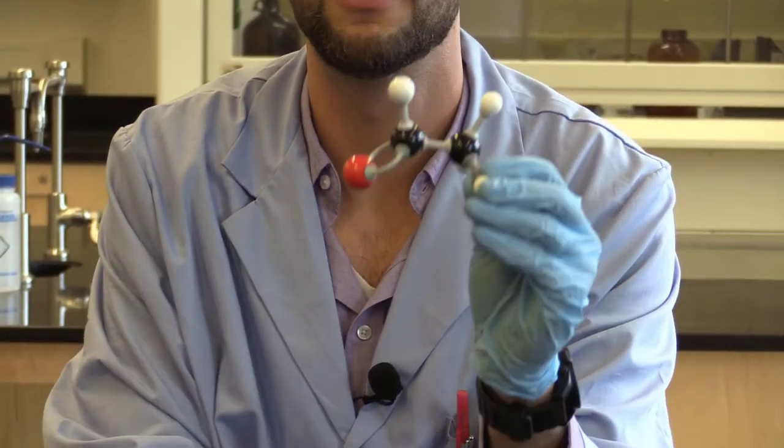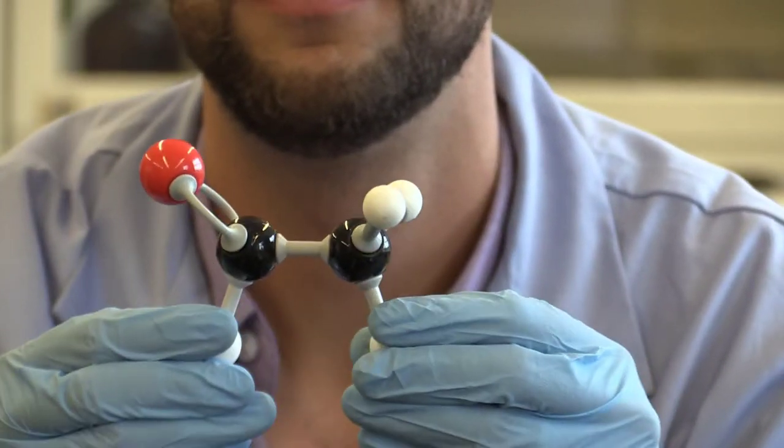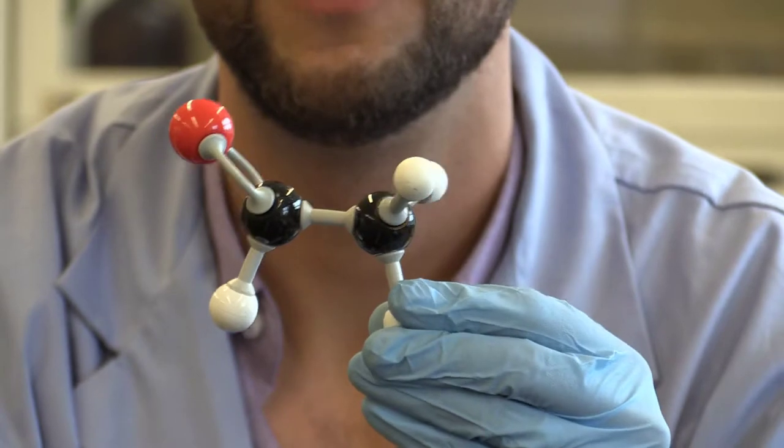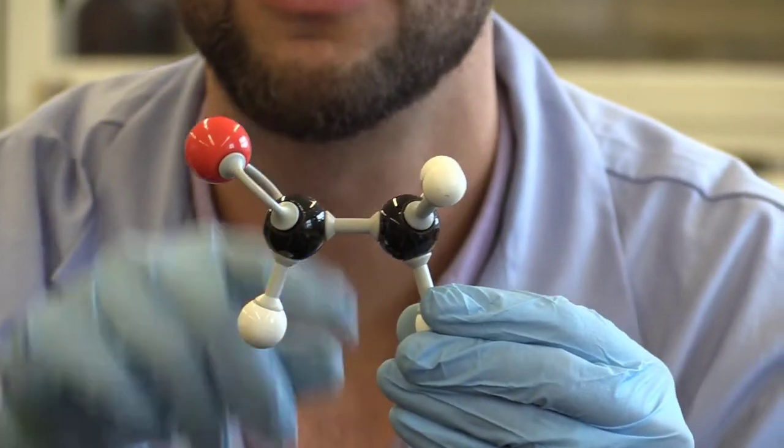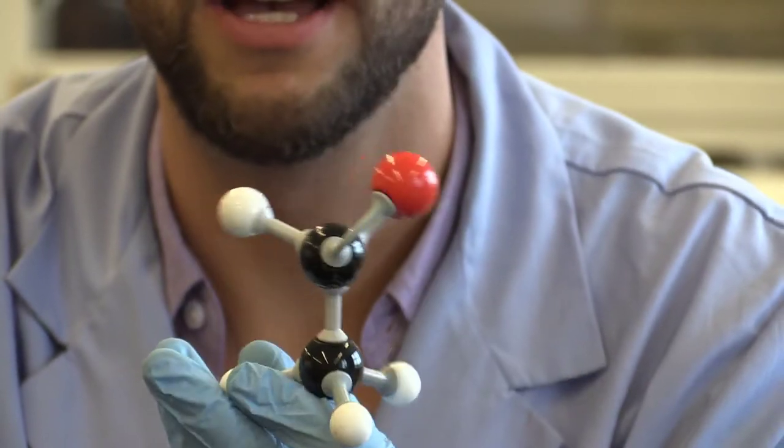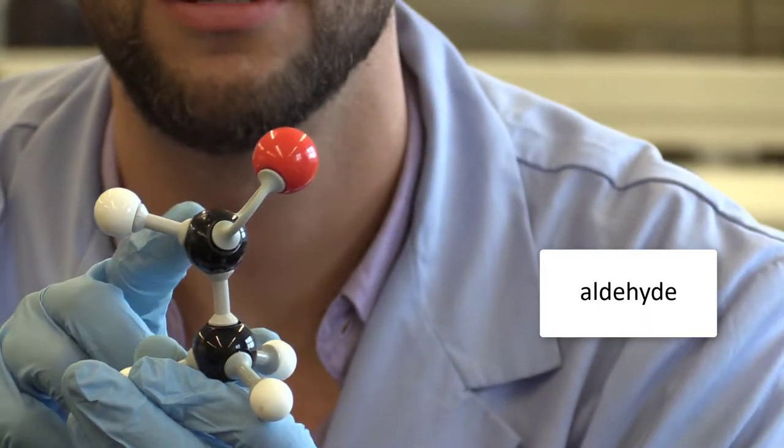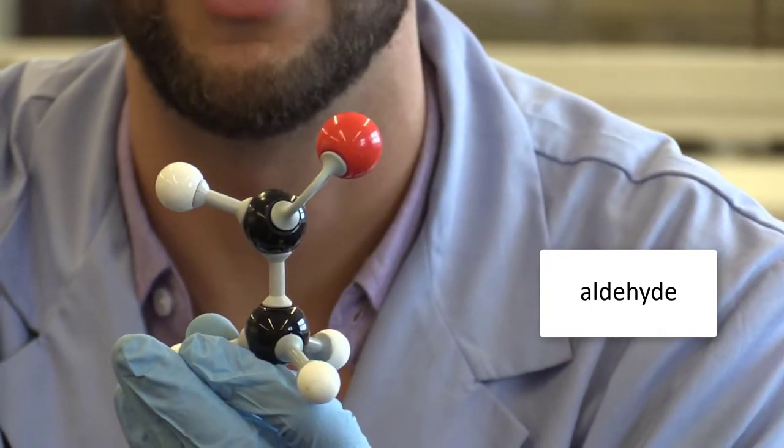Alright. What do you think of this guy? So the one thing you should notice is our functional group is right here on the end of our compound. So this is an aldehyde. You have a carbon bonded to a hydrogen and then double bonded to an oxygen.